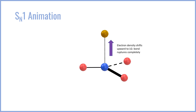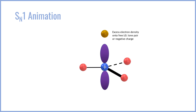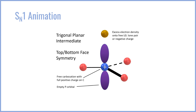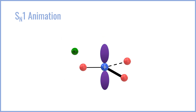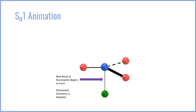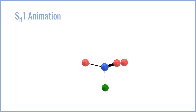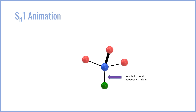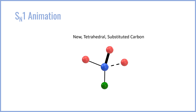As it's pulled away, we go into a trigonal transition state as the bond lengthens and ruptures, finally giving us a carbocation intermediate with an empty p-orbital. We have equal symmetry on the top and bottom face. The nucleophile can then attack both the top or the bottom face — let's say it attacks the bottom — and the nucleophile bond then begins to form.